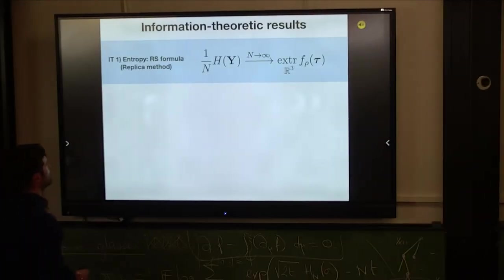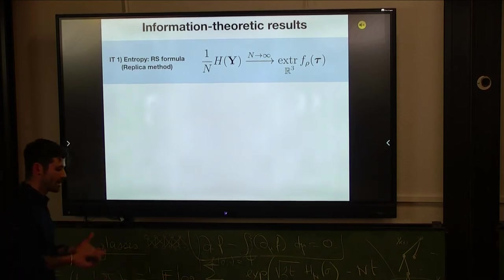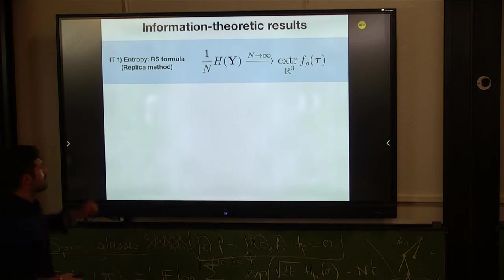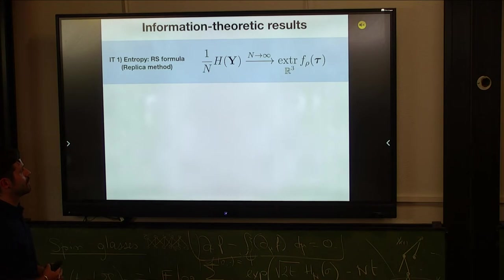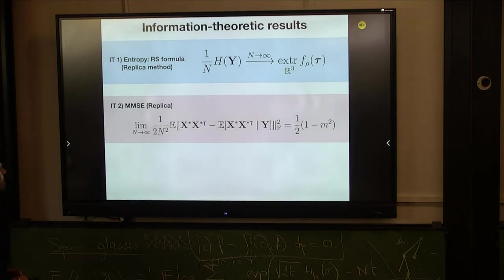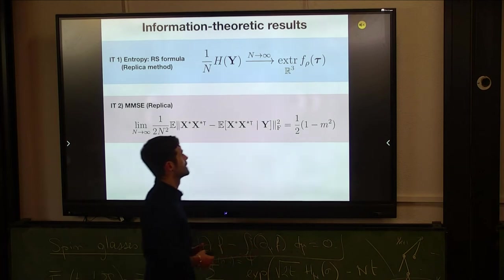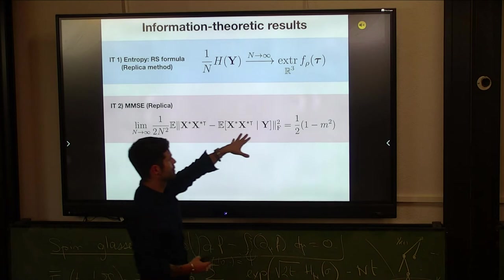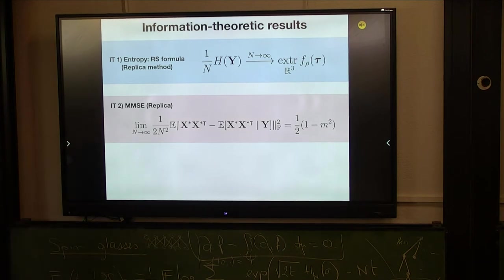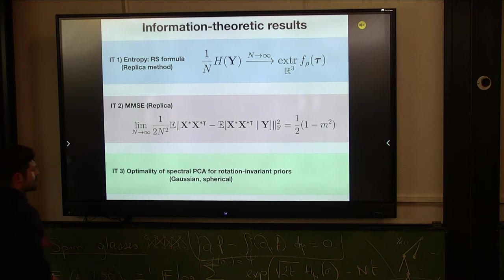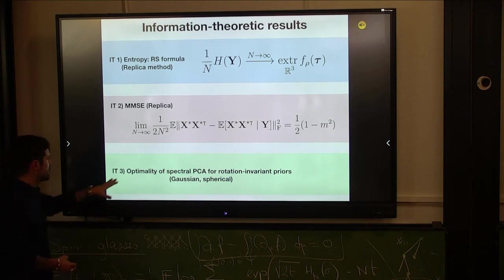So the first result is coming from the replica method. So this is a conjecture to be exact because we are in the Bayesian optimal setting, we're making a replica symmetry computation, but we have all reasons to believe that it will soon become a theorem. We're showing that the Shannon entropy tends to a saddle point formula, which is an extremum over R3 of a certain variational function. So we have an explicit characterization of this object from which we can deduce by solving this extremum equation, we can deduce the minimum mean square error, where this M is one of these parameters that is extremized over. So standard kind of results in the replica theory.